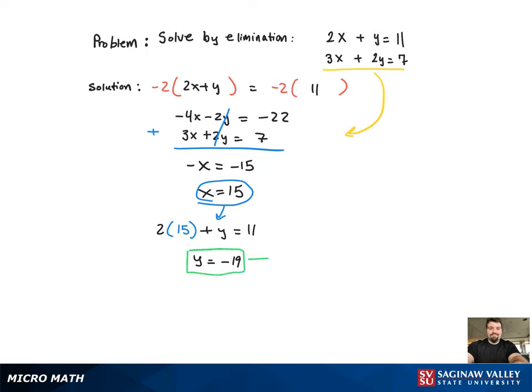That's the solution there, the ordered pair 15 comma negative 19, and there's the graph on the right-hand side.